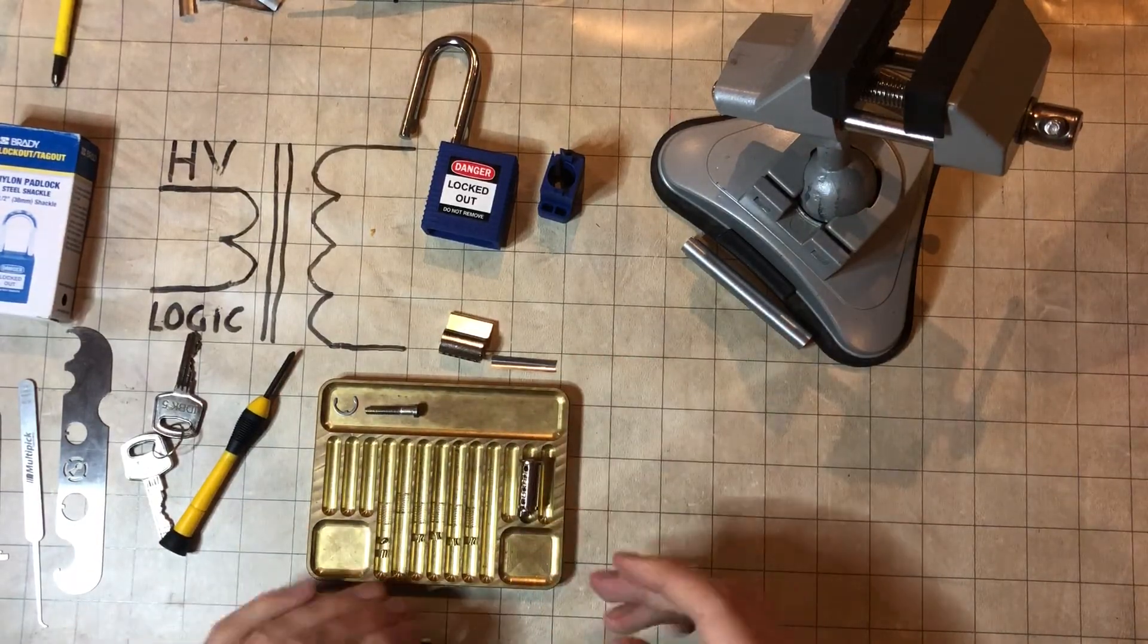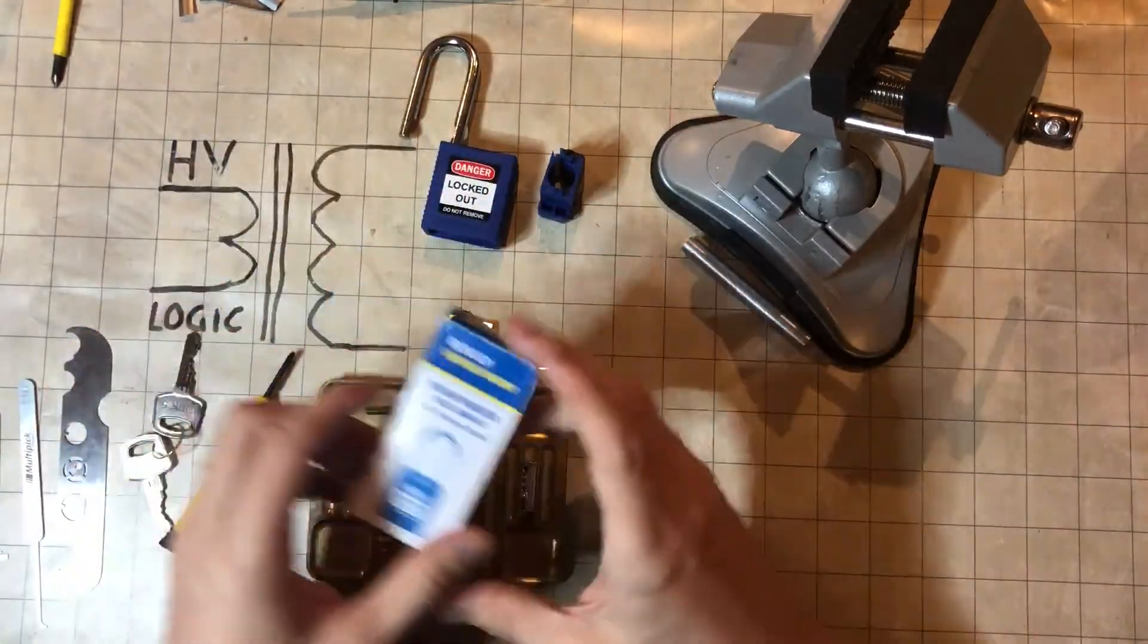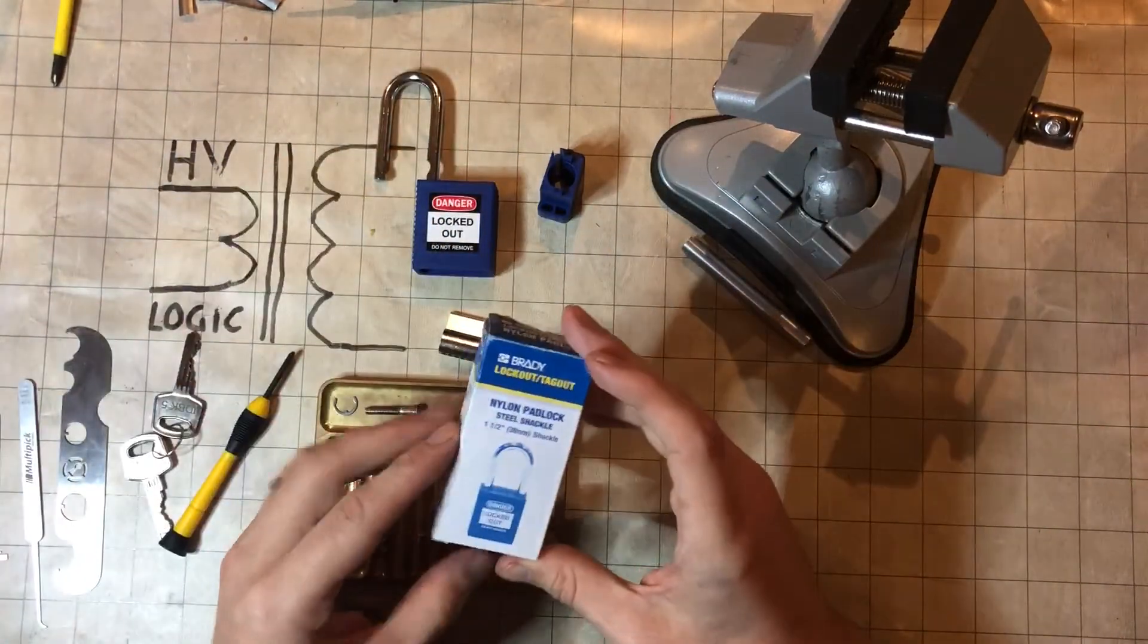And they do have the very cool Abus keyway, which is really the reason I bought this lock, was I wanted to have a look at one of those. So there you go, that's a Brady, obviously made by Abus, lockout tag-a-lock.